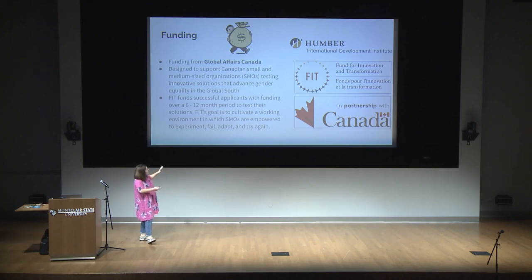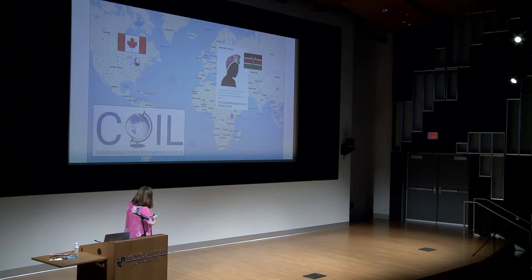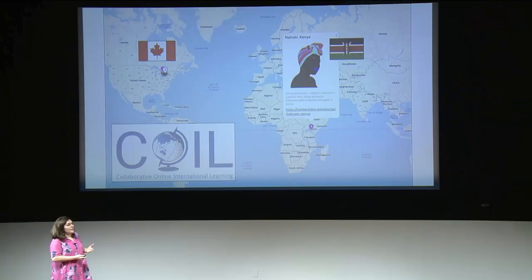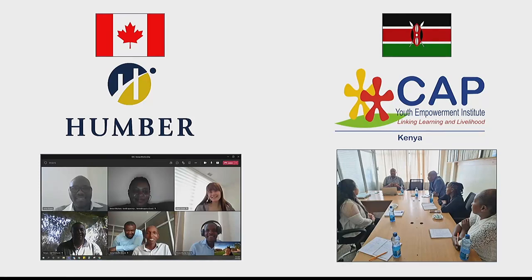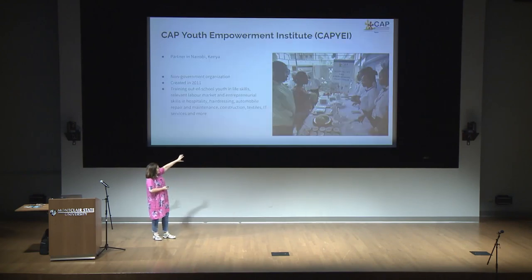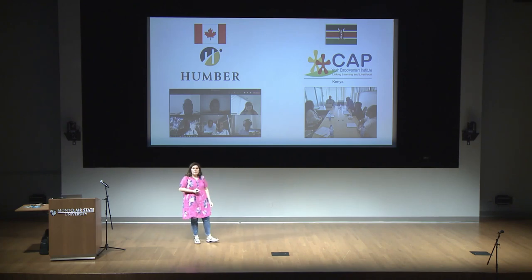Our partner was Capier — Cap Youth Empowerment Institute — in Nairobi, Kenya. Humber partnered with Capier, and they recruited the beneficiaries: female refugees with small businesses, most of them into clothing, jewelry making, or some sort of handcraft who wanted to monetize their work and needed support with online presence. I managed to recruit students from four different programs at three different schools at Humber: digital business management, fashion arts and business — because most beneficiaries were into clothing and fashion — professional writing and communications to write the content, and creative advertising students for graphic design and branding.